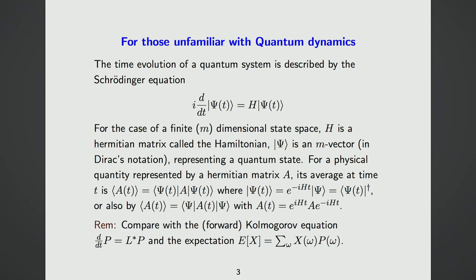For a finite dimensional state space, H is just a Hermitian matrix called the Hamiltonian. The state psi is a ket vector—this is Dirac's notation—and is an M-vector corresponding to the finite dimensional state space. We are interested in some physical quantity represented by a Hermitian matrix A.